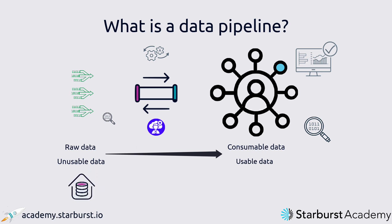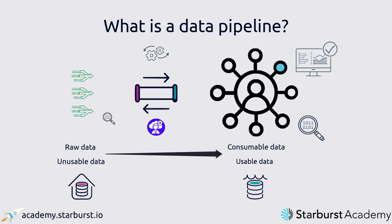For data warehouses, this is typically done before the data enters the warehouse. For data lakes using schema on read, data is added first and structure is added later. In either case, data pipelines are critical to making sure that data moves from its unusable, raw state to its usable, finished state. It's this final state that lets businesses make change using data to help drive organizational change and value. And that is what data pipelines are truly all about.